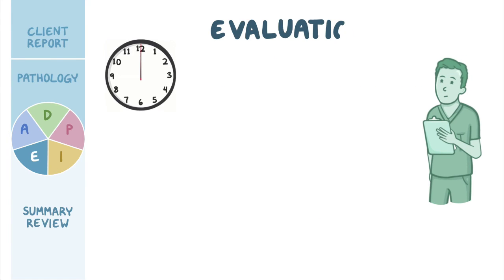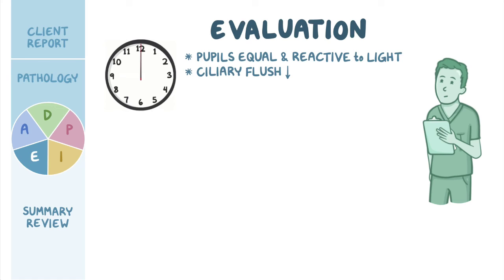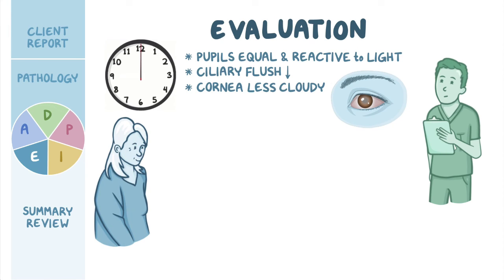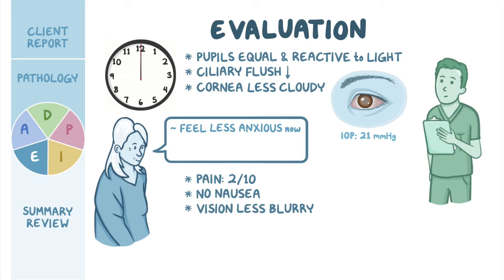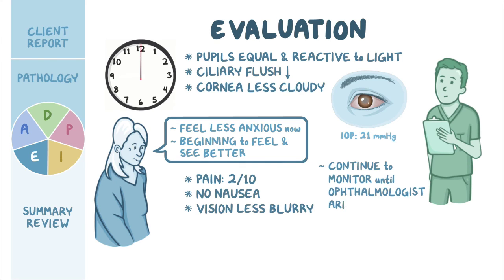One hour later, you evaluate the effectiveness of your interventions. Her pupils are equal and reactive to light, the ciliary flush has significantly reduced, and the cornea is less cloudy. Mrs. Yao rates her pain as 2 out of 10. She says she has no nausea and that her vision is less blurry. The physician measures an IOP of 21 millimeters of mercury. Mrs. Yao tells you she feels less anxious now that she understands more about what was happening to her eyes and that she is beginning to feel and see better. You continue to monitor Mrs. Yao until the ophthalmologist arrives.